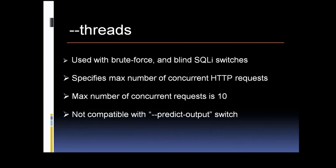The next one is the threads switch. This switch works with any of the brute force switches available with SQL Map as well as blind SQL injection techniques. When used with blind SQL injection, a single thread is used to calculate the length of the output, and once SQL Map has that value it starts the multi-threading process. Each thread generated retrieves one character of the query output. The multi-threading references the number of concurrent HTTP requests being sent. You can set the maximum number of requests to 10 — any more than that and you may start running into performance issues with your target site.